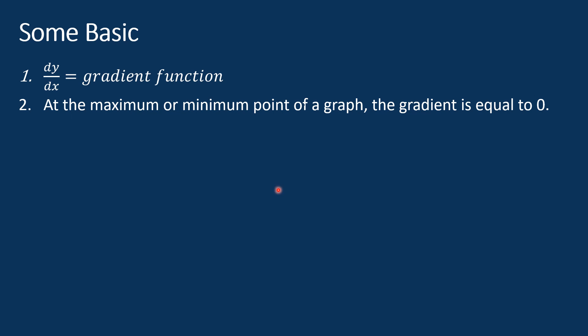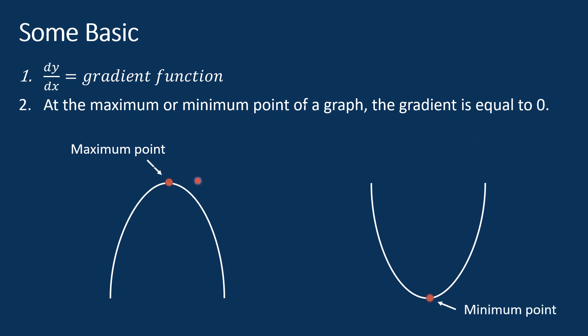Number two: at the maximum or minimum point of a graph, the gradient is equal to zero. Since dy/dx is the gradient function, and the gradient at the maximum or minimum point is equal to zero, we can conclude that at the maximum or minimum point, dy/dx is equal to zero. We are going to use this to find the maximum or minimum point of a quadratic function.